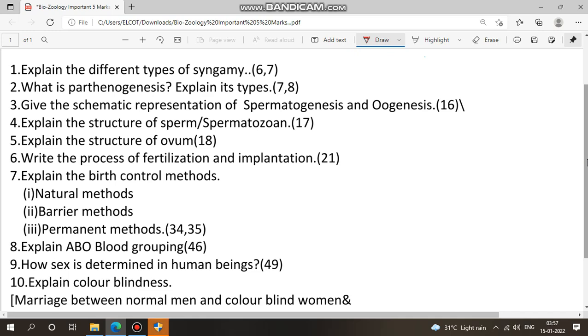So we will cover 4 chapters. First question: explain the types of syngamy, page number 6 and 7. So there are 2 types, Isogamy, Anisogamy, Exogamy, so you will learn.